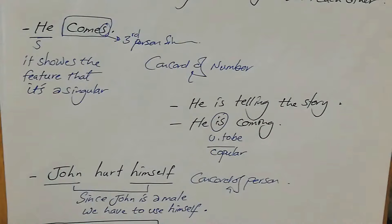Concord in English can be of two types: either concord of number or concord of person. We have two elements in a sentence and they should agree with each other. We studied these topics with Professor Randolph Quirk.